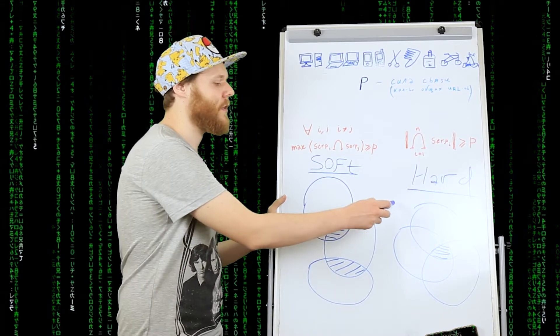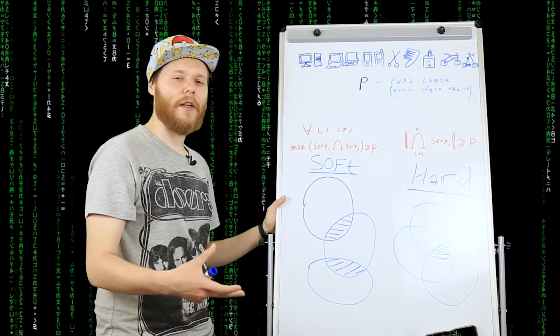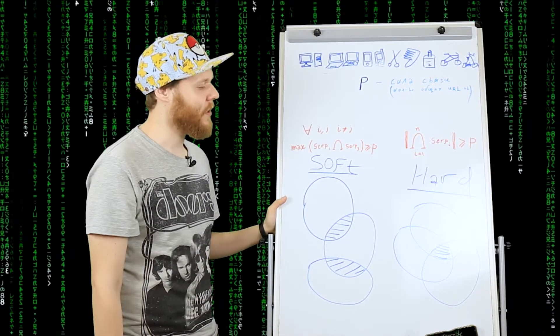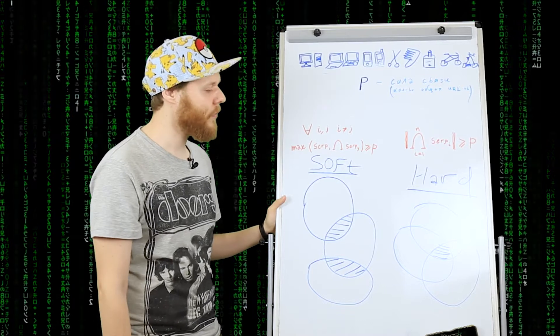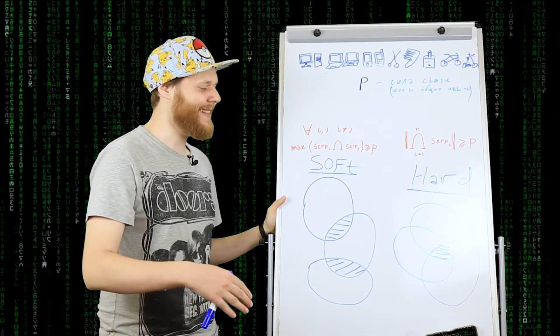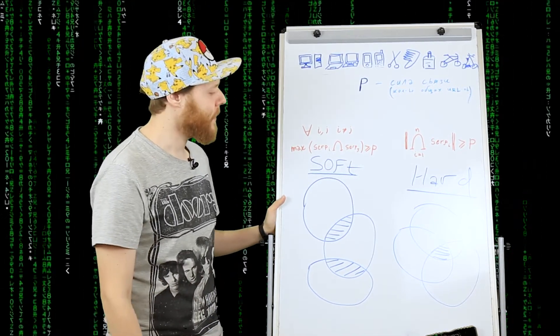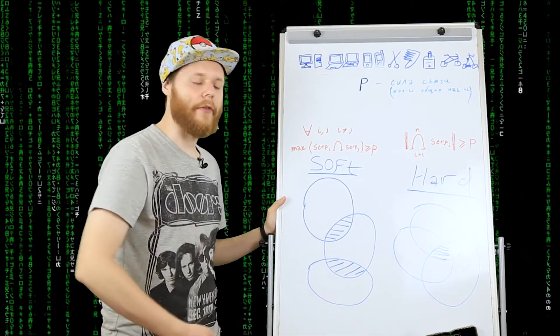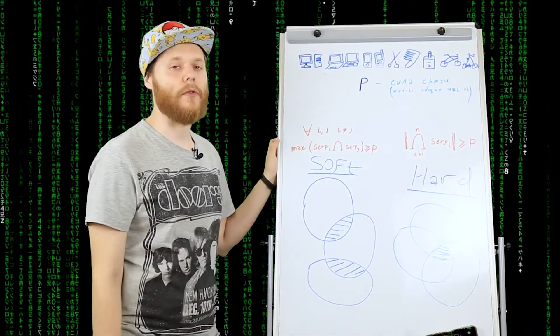Soft же кластеризация в этом плане не такая жесткая и дает возможность не иметь смежных урлов у некоторых групп ключевиков. Соответственно, Hard кластеризация делает кластера более узкими по тематике и в них меньше ключевиков, но зато эти кластера становятся точнее. Soft же собирает их в более широкие по смыслу кластера.